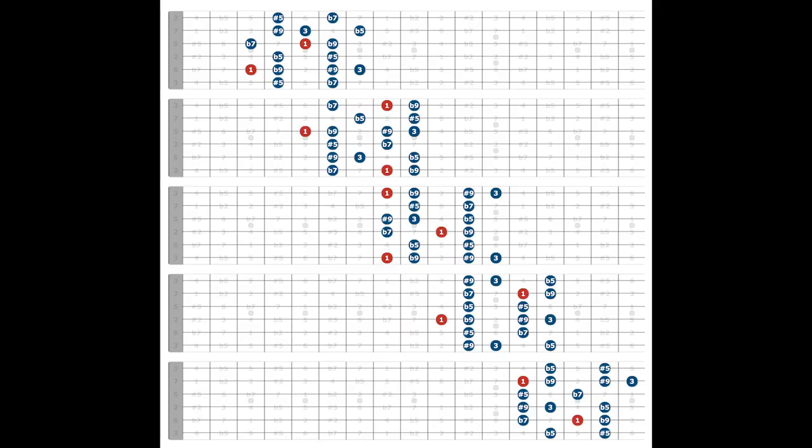Hey, Jared here from SoundGuitarLessons.com. What you're seeing on the screen right now are the five positions of the altered scale — the five scale forms, the five scale shapes. I did a lesson a few videos ago about the altered scale, all about how to map it out on the guitar, how to listen for it, how to think of it as its own thing and not just a mode of the melodic minor scale. I'll put a link in the description to that video.